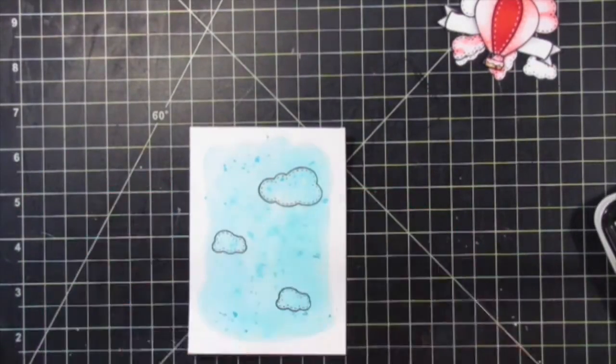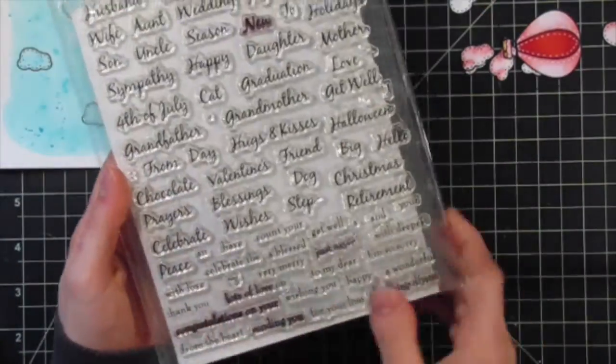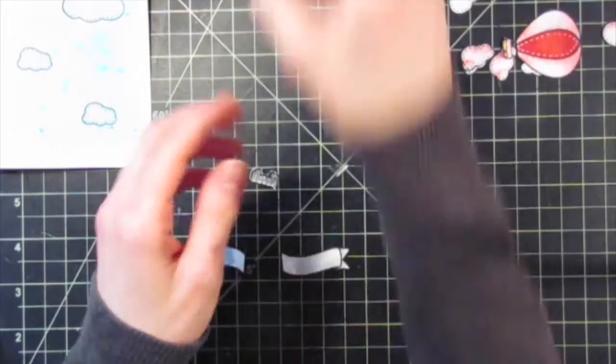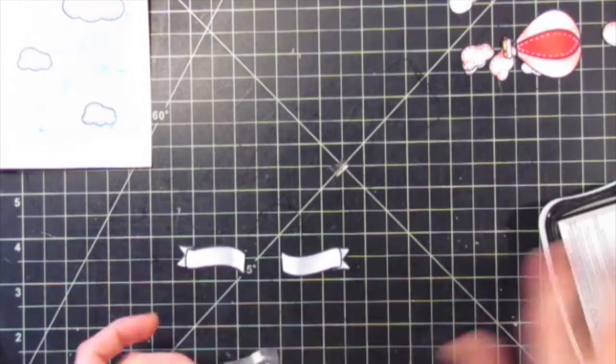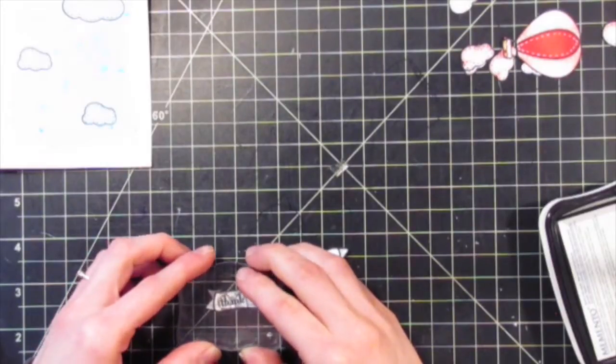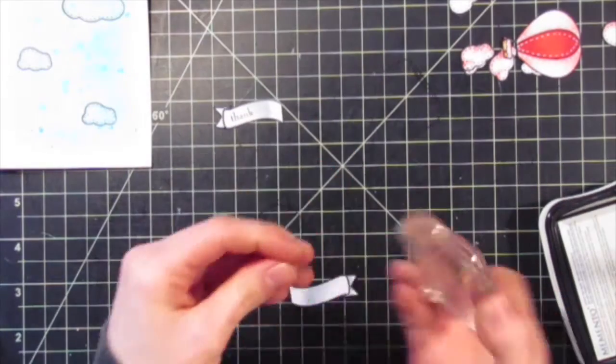I'm taking this Cindy Etchanell Designs stamp set called Big and Small Says It All, and I cut the 'thank you' part. I'm stamping that on each side of the banner so one side will say 'thank' and the other side says 'you,' and we'll later put those together behind the hot air balloon.